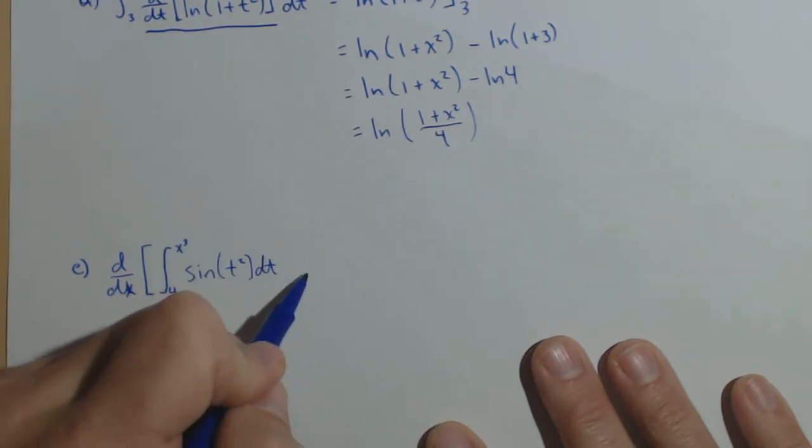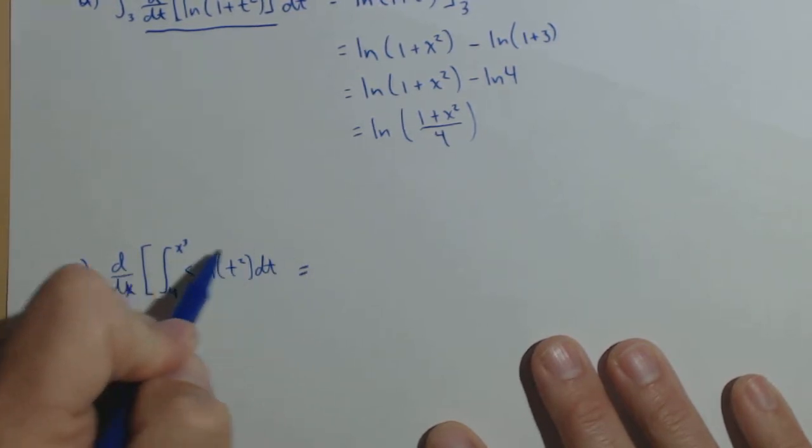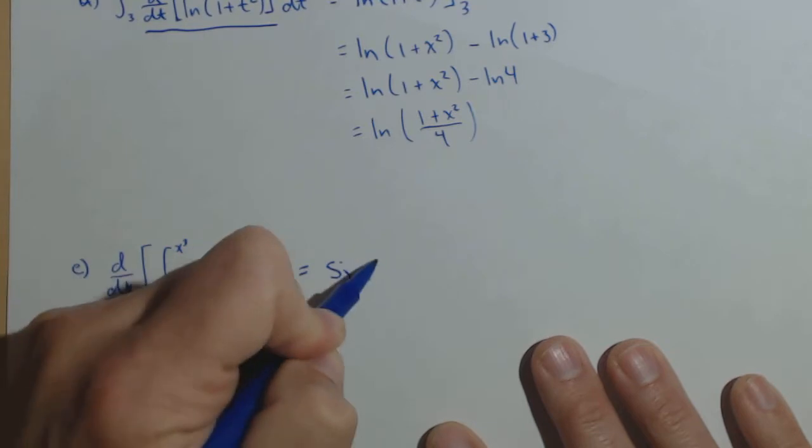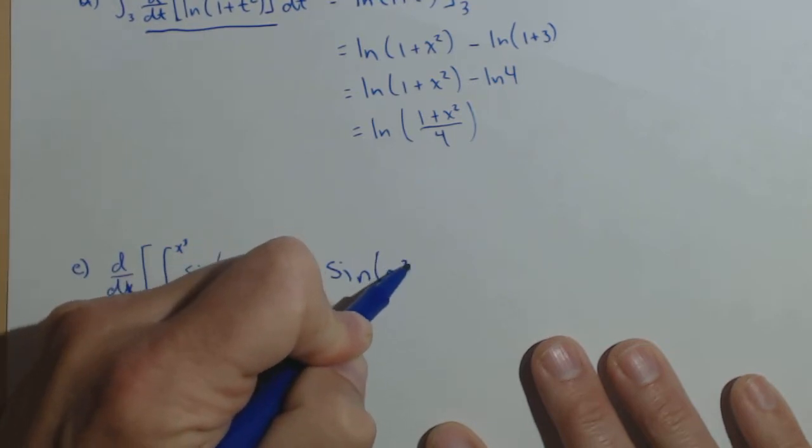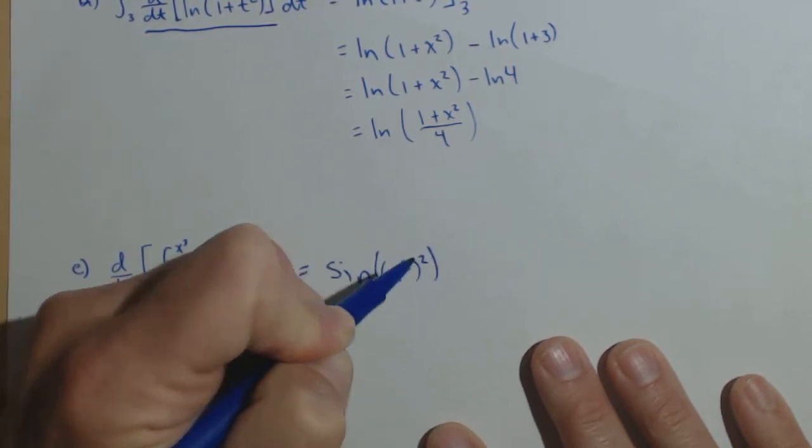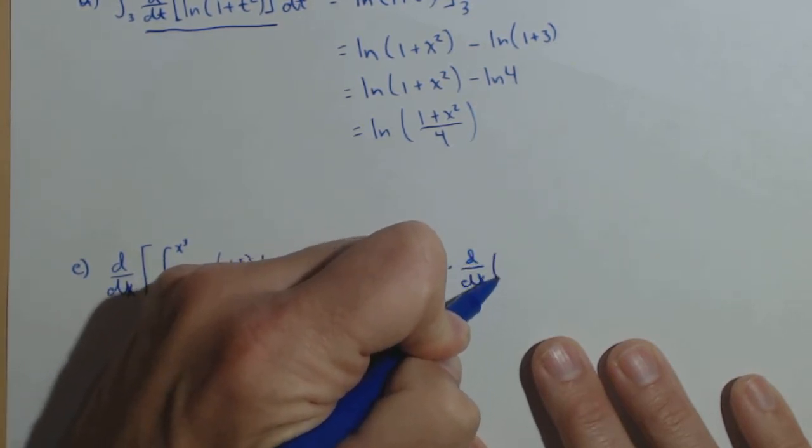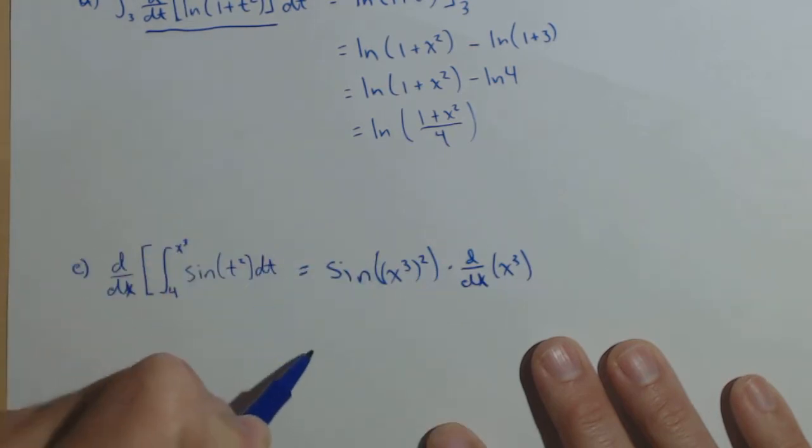So, we have a chain rule. So, what's gonna happen is we're still gonna have that substitution. So, sin of x cubed squared times, now this is via our chain rule, the derivative of x cubed, because that's our inside function. So, we get three x squared,